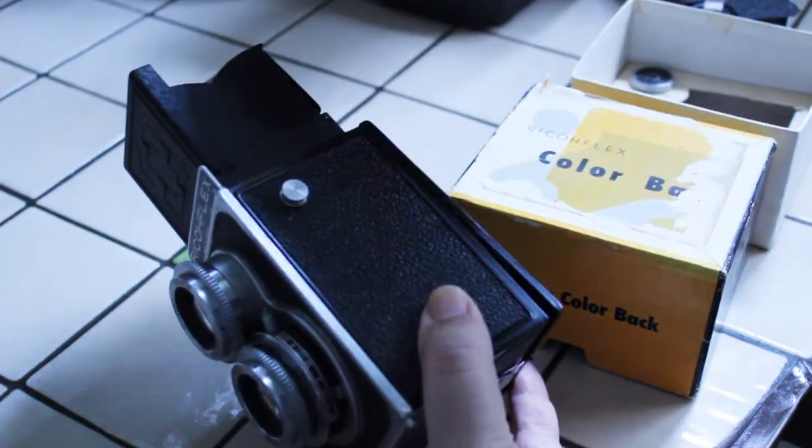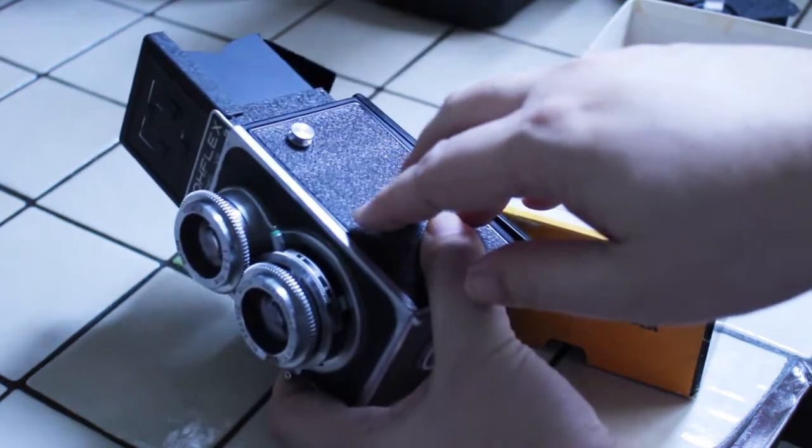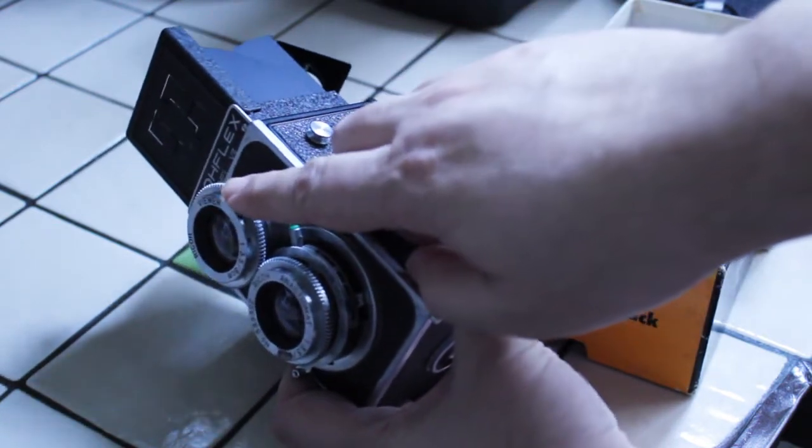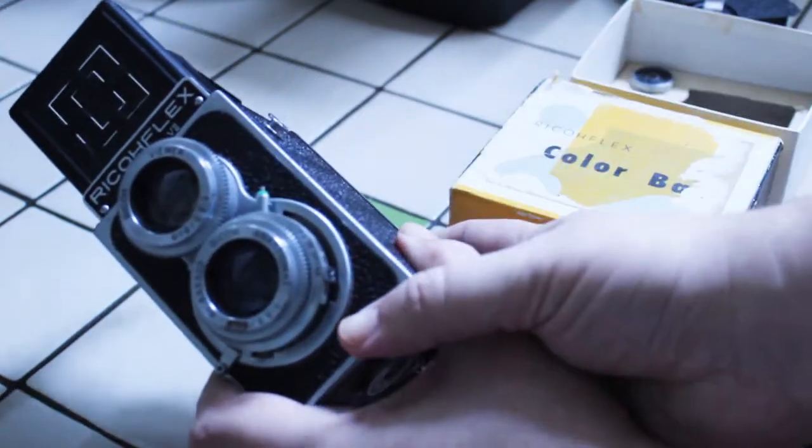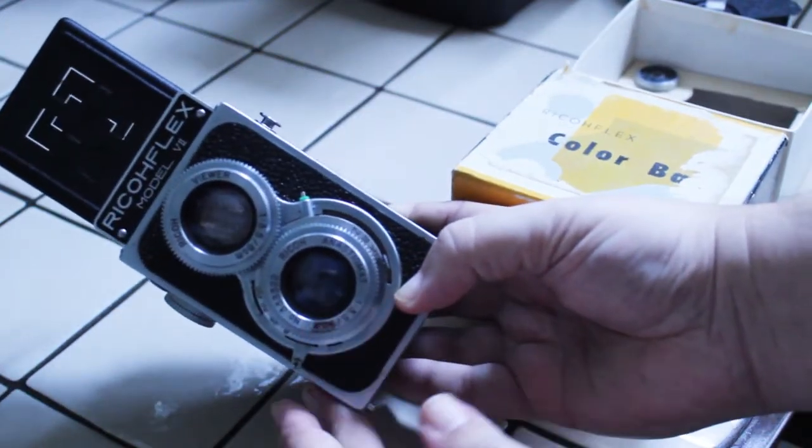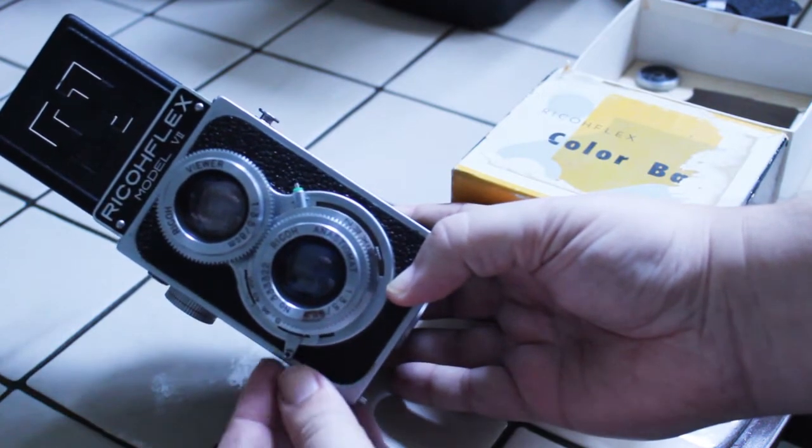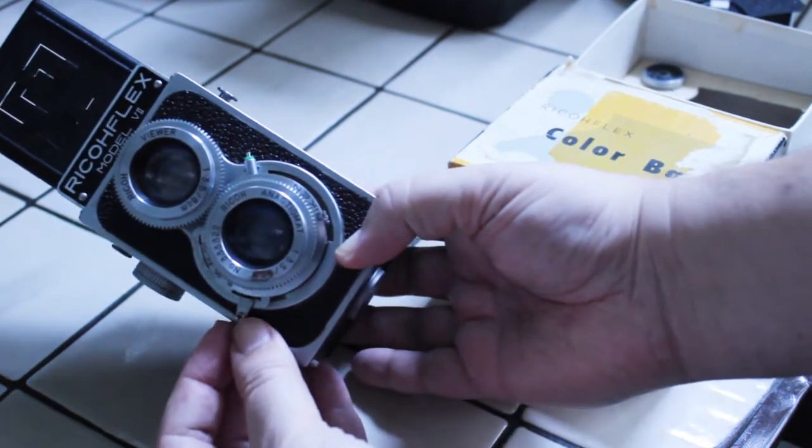So you would open up the top of the camera like that and you would look down through here to frame your photo and get it all in focus. And again, that was all being done through this top lens here. And when you were ready, you would take your photo, and again the photo would be taken with the bottom lens here.